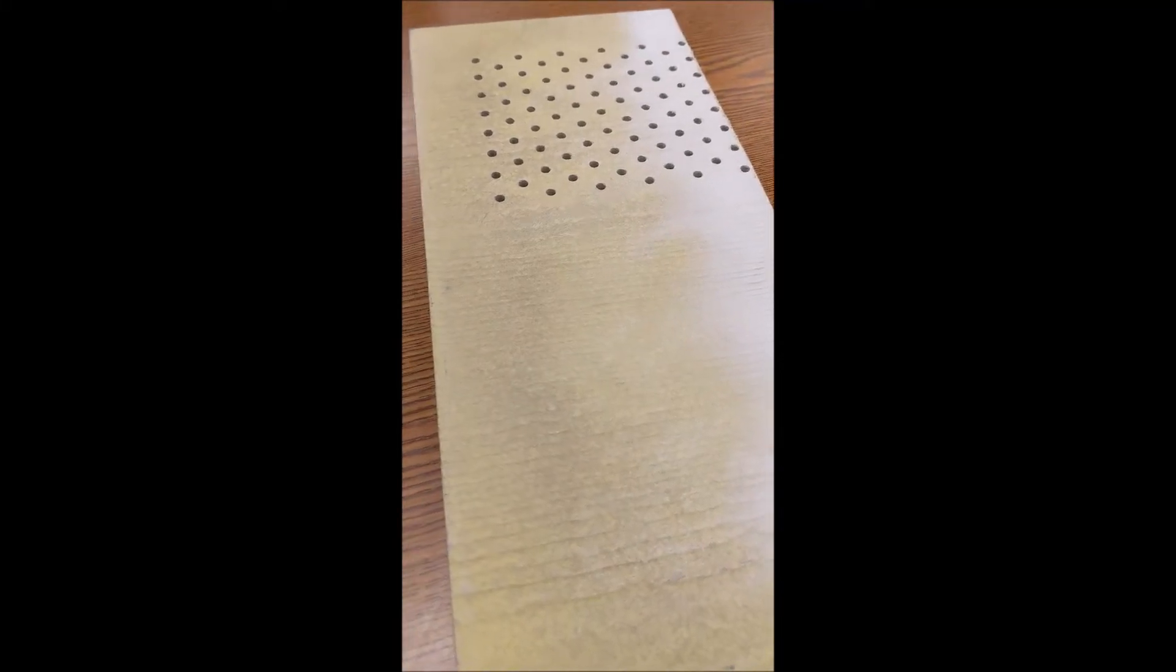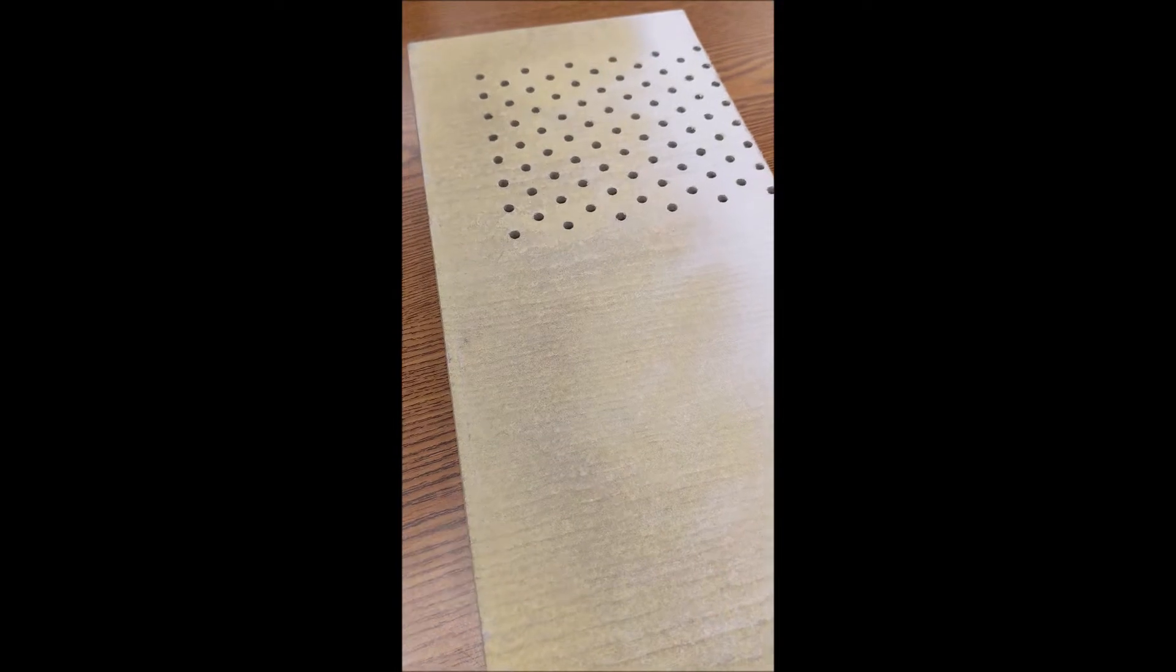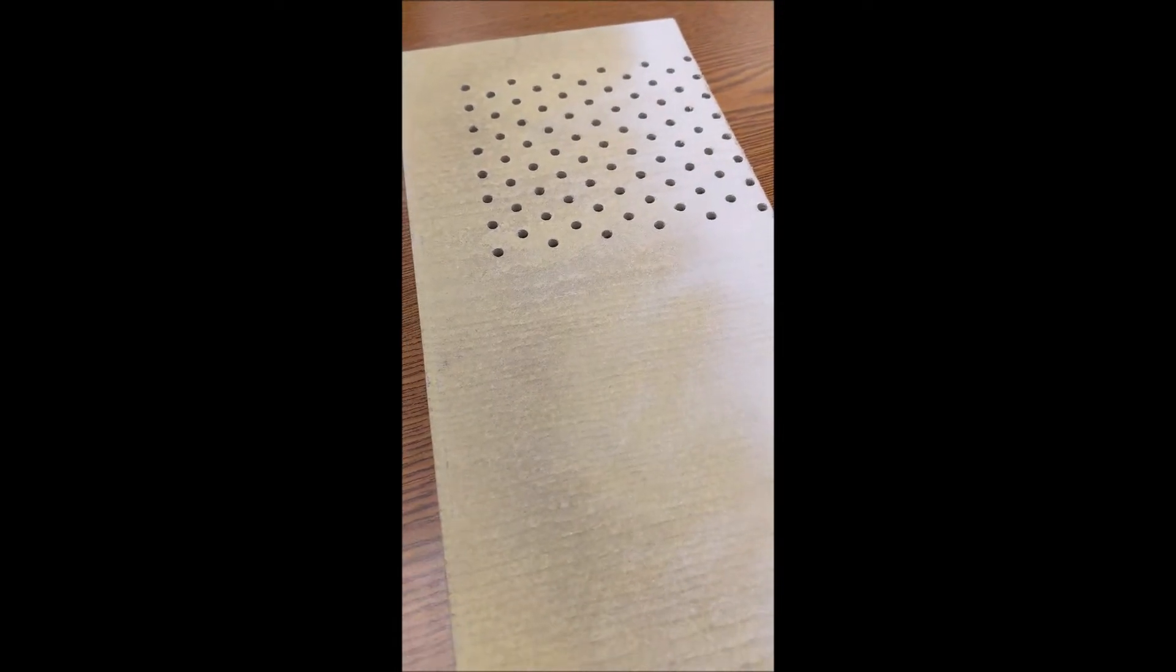So this is hardy plank. It's a cool product. It's a fiberboard. You got to use it under the soffits and then those are breather holes.